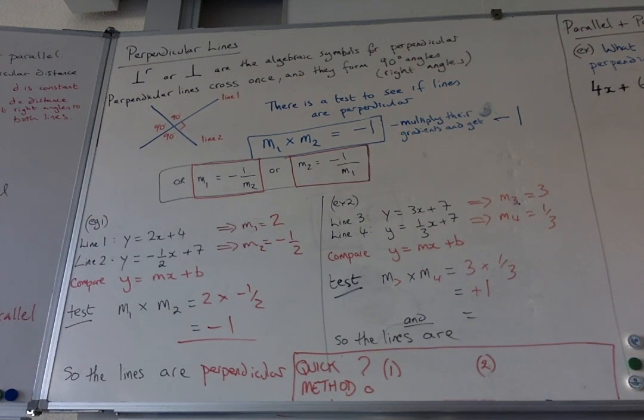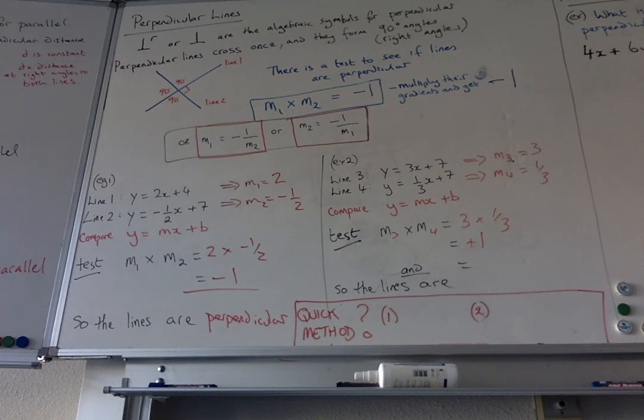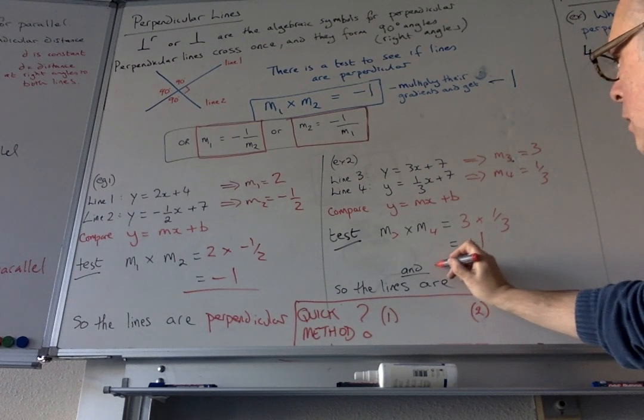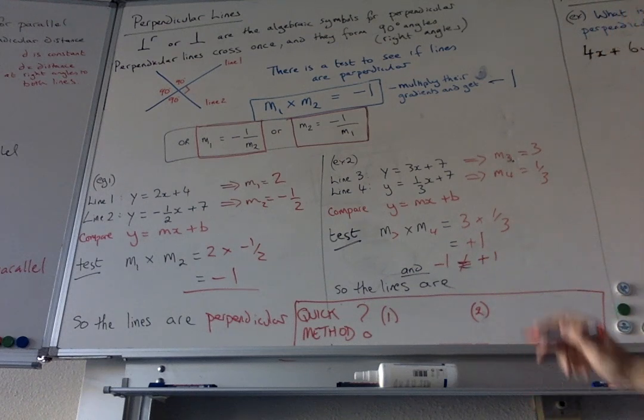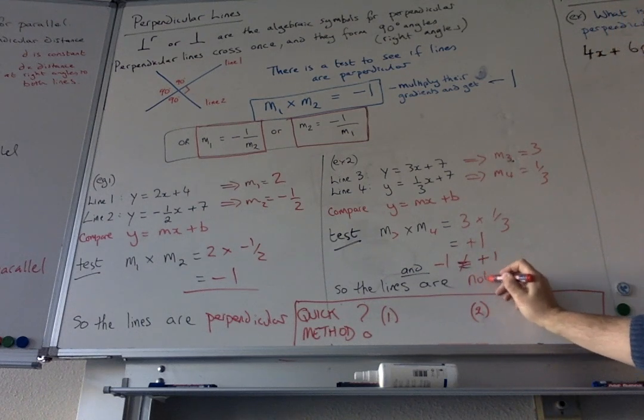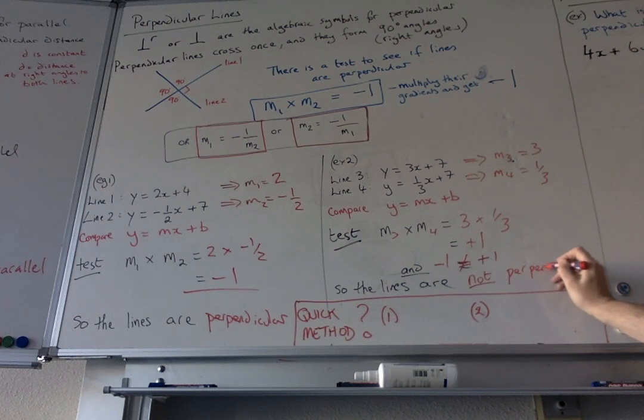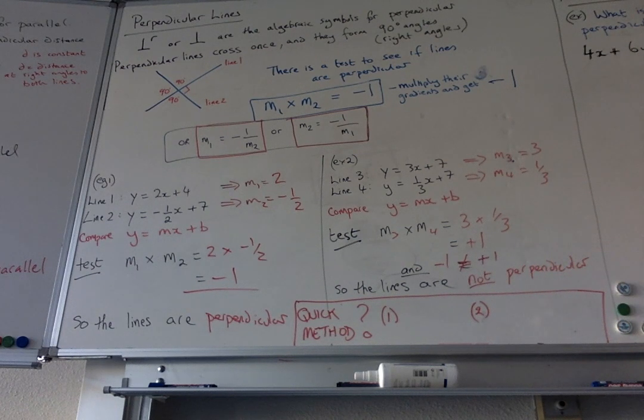Oh, so that means that we know minus 1 does not equal plus 1. So this means the lines are not perpendicular. And I hope that's what you've got.